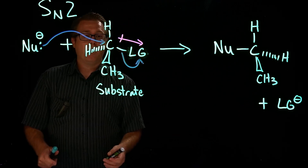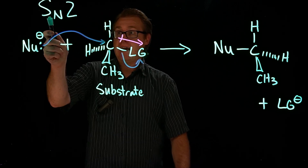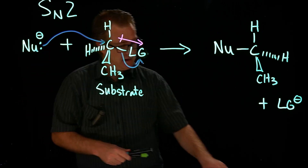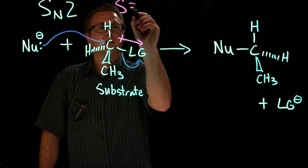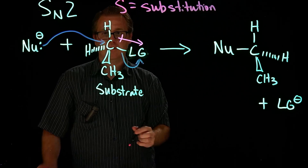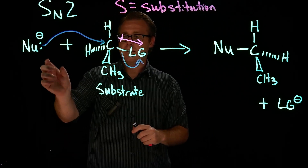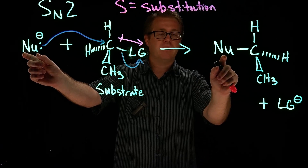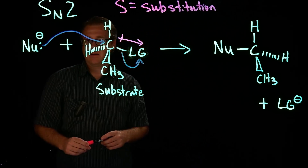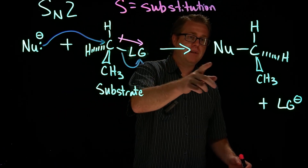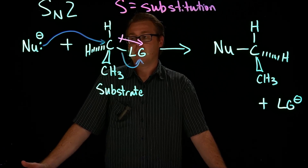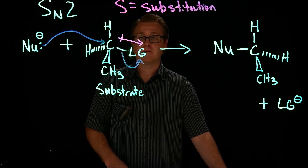Now let's talk about why this is called an SN2. The S stands for substitution. We are substituting the nucleophile for the leaving group. The leaving group is leaving and we're replacing it with our nucleophile — so it's just a substitution. One group comes in, one group leaves.